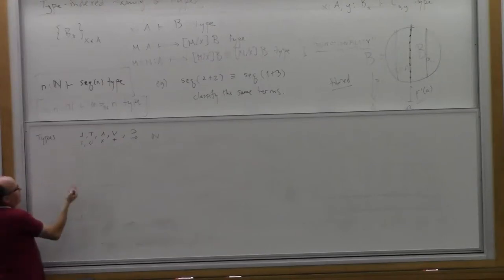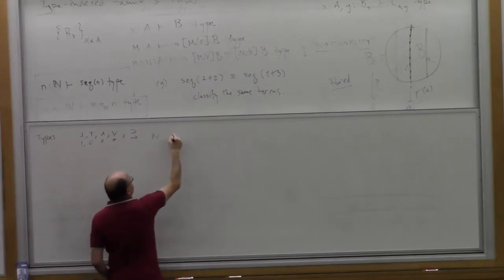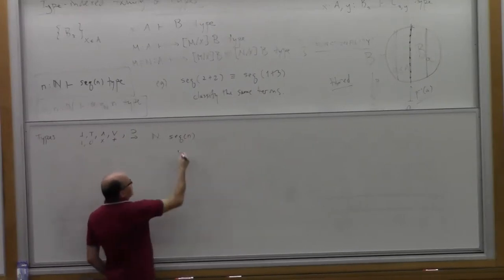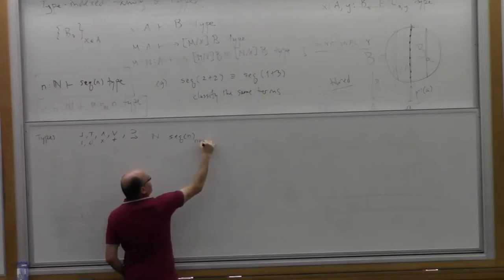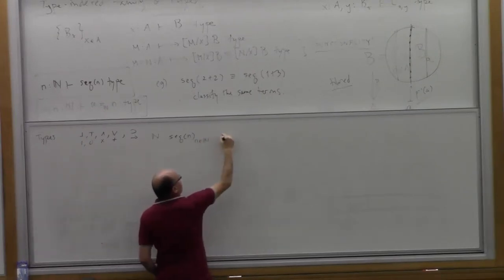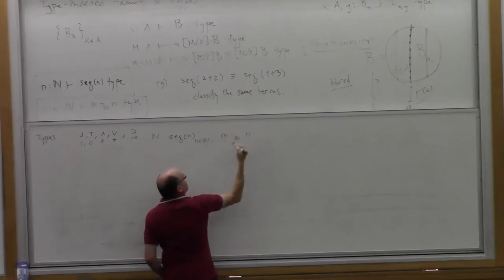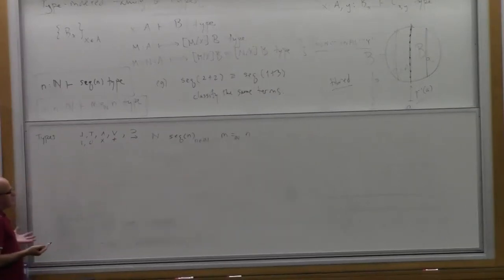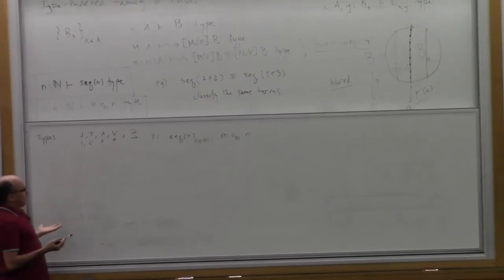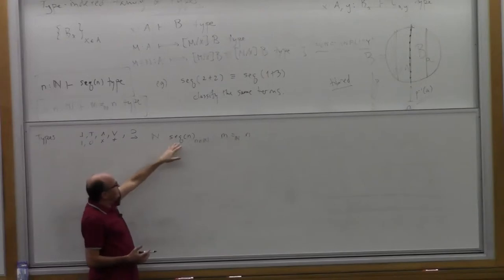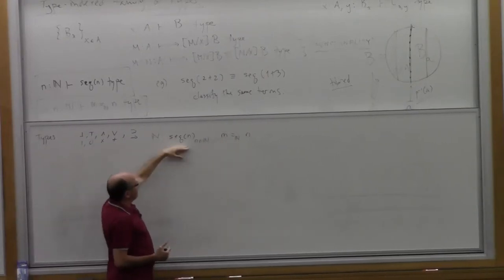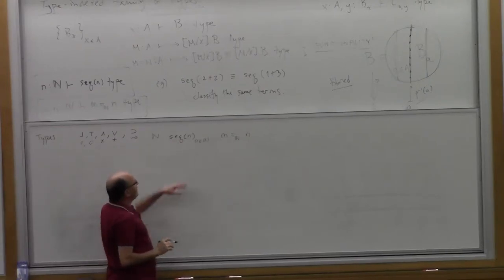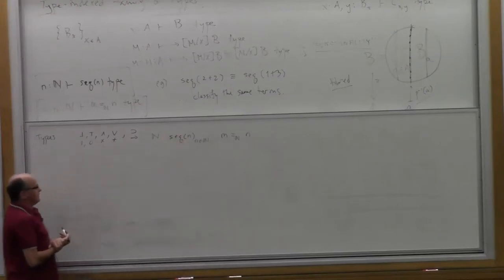Now we want to start populating type theory with other interesting types. We'll have things like sequences of length N indexed by N, and equalities over the natural numbers. These are forms of types — base types — that can be thought of as primitive notions: the type of proofs of equations, or the type of finite sequences. Maybe sequences can be represented in some other way, but for the moment we'll take them as a primitive notion.